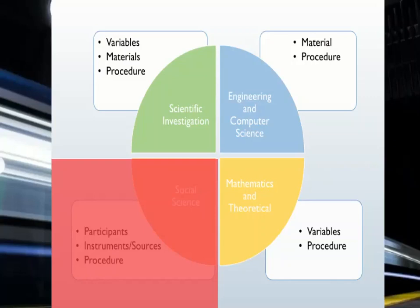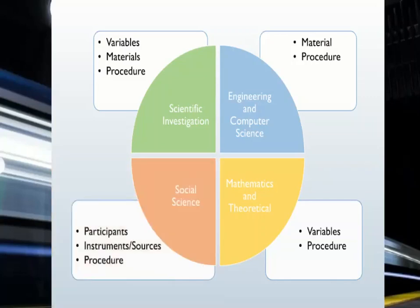For social science projects, provide a description of the participants, including the number of participants, their gender, age and other relevant demographics. List all the instruments used for the study. These may include surveys, questionnaires, social experiments or polls. Include samples of instruments in the appendix.